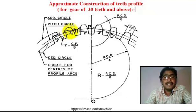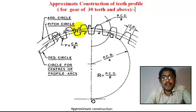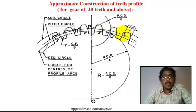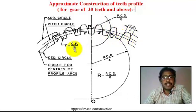Points 2, 3, and 4 are marked as CP by 2 on the pitch circle. By this way, we mark this point, this point, this point — all at CP by 2 spacing along the pitch circle.